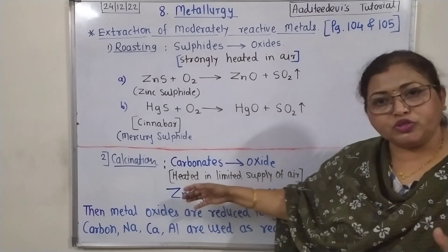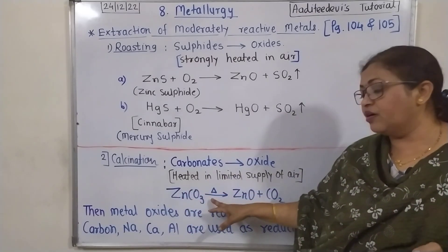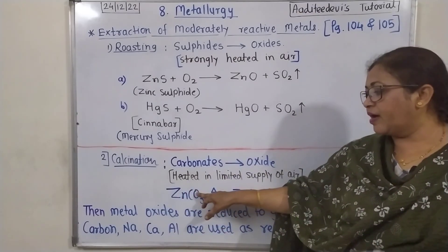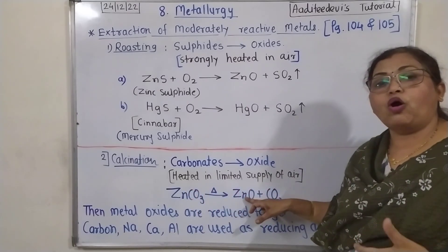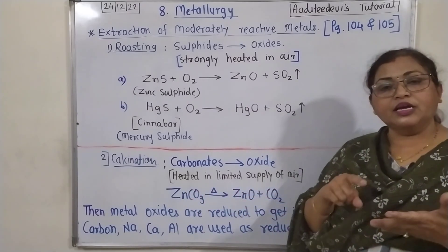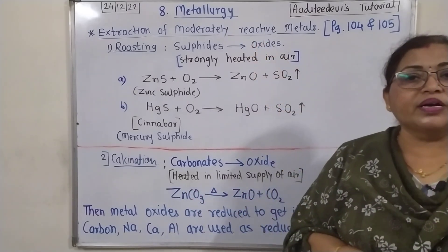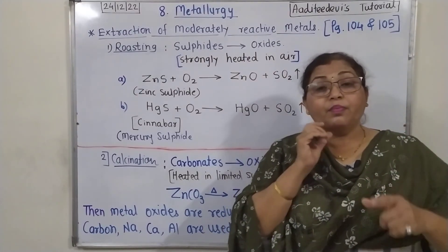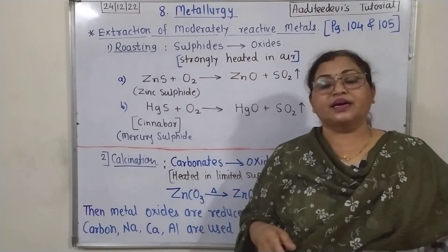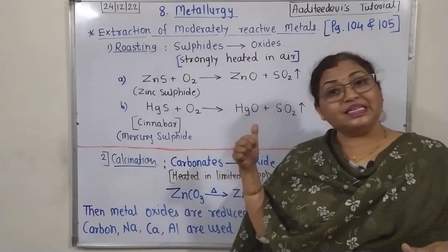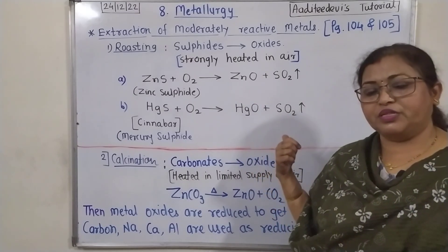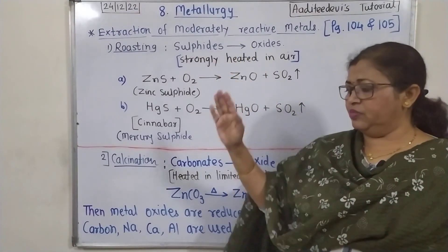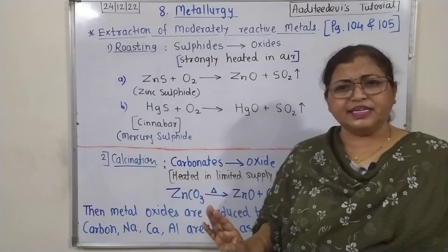Zinc is also found in the form of carbonate. This carbonate forms zinc oxide. These are moderately reactive metals — they will form a metal oxide in this extraction, but by two processes: roasting and calcination.